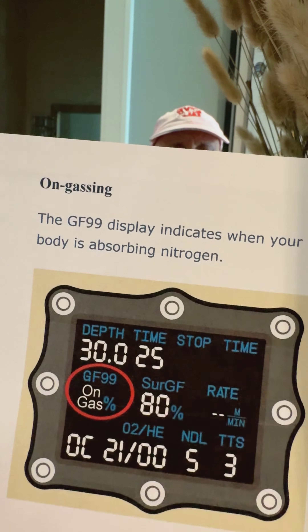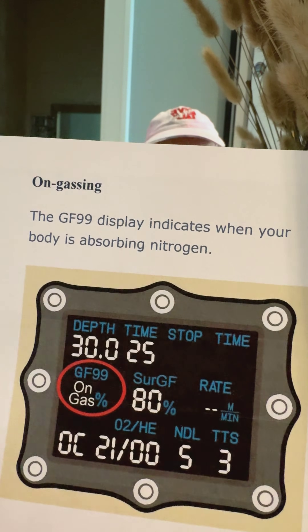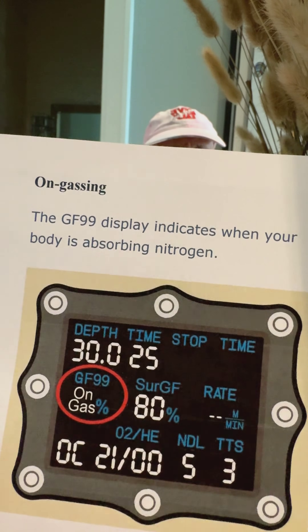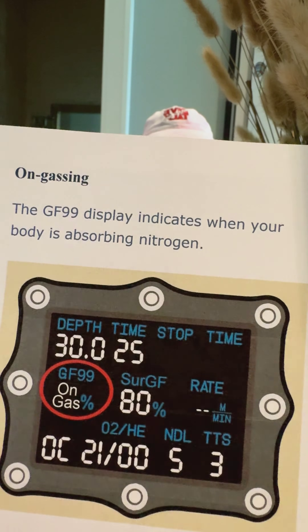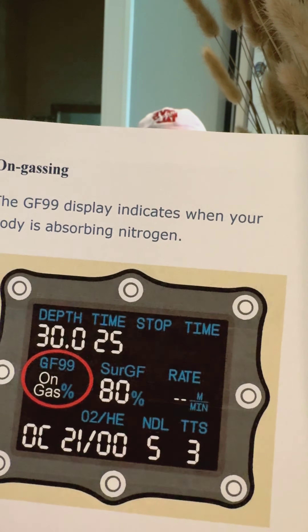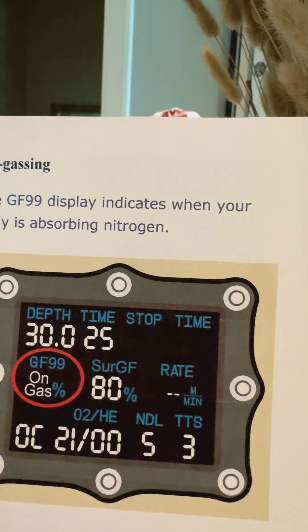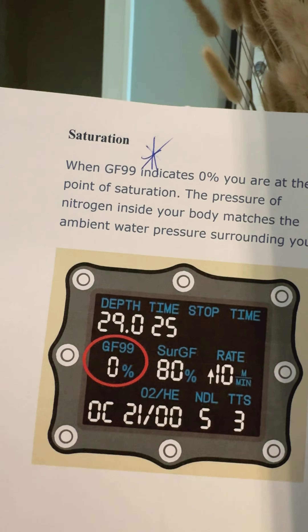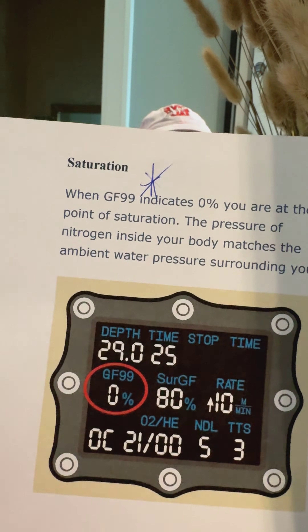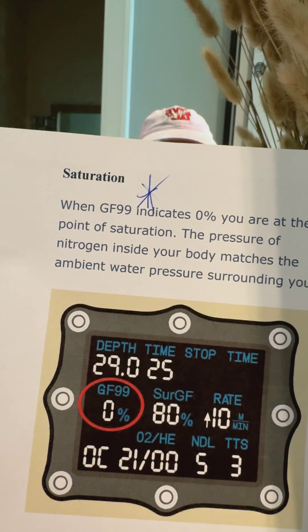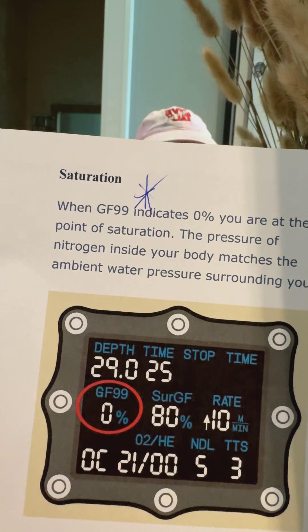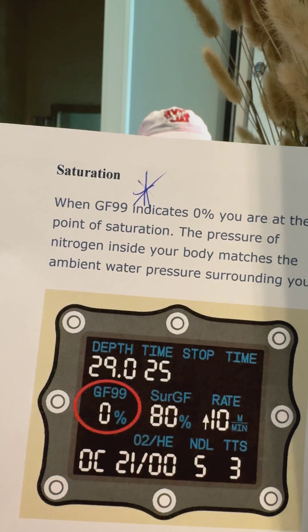When GF 99 is displaying on-gassing, that means you're absorbing nitrogen. So you click that right button on your Shearwater — am I on-gassing? According to this, yes — typically when you're going down, that's what you're going to see. Now, when GF 99 indicates 0%, you are at the point of saturation. The pressure of nitrogen inside your body matches the ambient water pressure surrounding you.